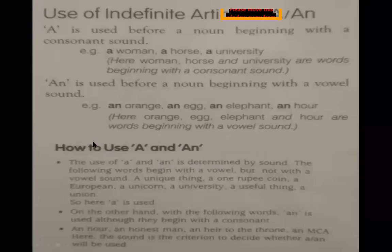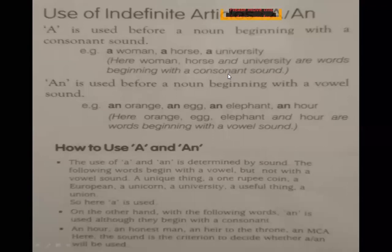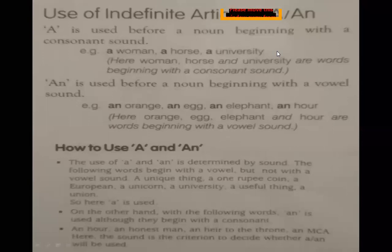Use of indefinite article A: A is used before a noun beginning with a consonant sound. We have two types of sounds — consonant sounds and vowel sounds. When a noun starts with a consonant sound, A is used. Note: we consider sound, not the letter. Examples: a woman, a university, a one-rupee coin — these begin with a consonant sound, so A is used.